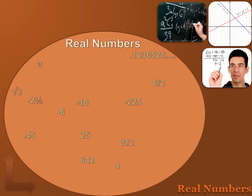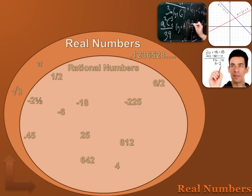Real numbers are all the numbers that you can think of. You can see it includes pi, the square root of 2, minus 2 and a third, minus 18, 4, 642. Any number you can think of is a real number. But there are certain classifications under real numbers, and we're going to use this Venn diagram to understand them. The first classification is rational numbers.